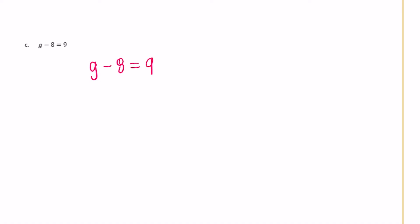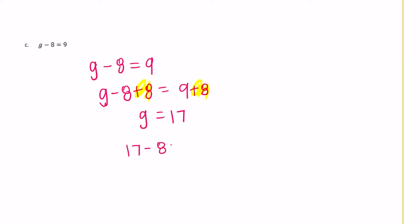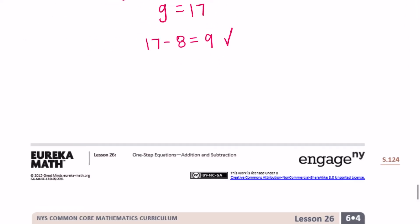Part c: g minus 8 equals 9. We're trying to get g by itself, so I need to add 8 to cancel the minus 8. So g minus 8 plus 8 equals 9 plus 8 — adding plus 8 to both sides. g equals 17. Checking: 17 minus 8 equals 9. That is true. And that is the end of that classwork.